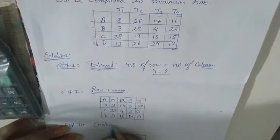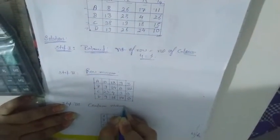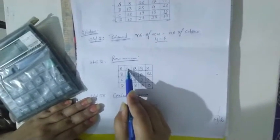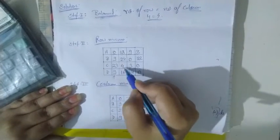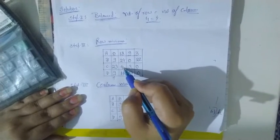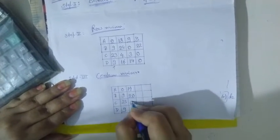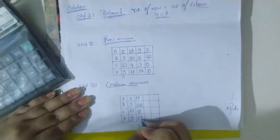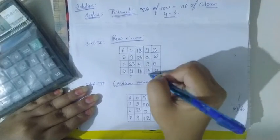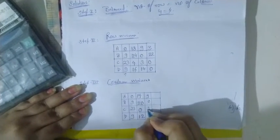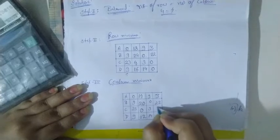The next step is column minimum. We go column-wise. In the first column, we already have a 0, so that is the minimum element — subtracting 0 means everything remains as it is. In the second column, the minimum element is 4: 18 minus 4 is 14, 24 minus 4 is 20, and 16 minus 4 is 12. In the third and fourth columns, we already have 0s, so nothing changes.